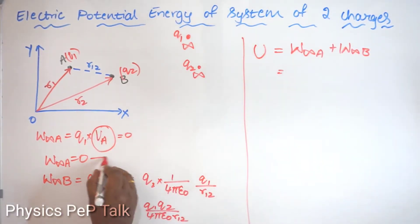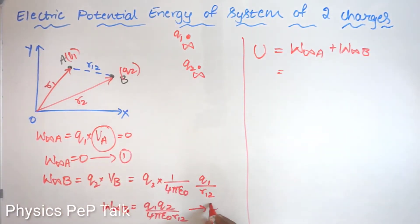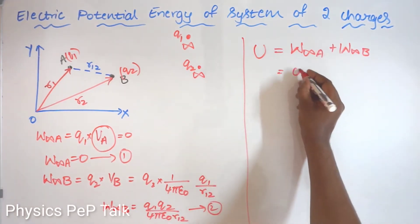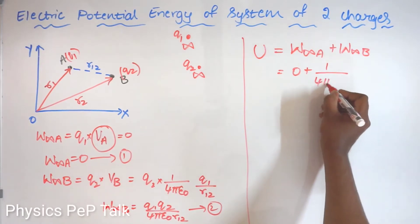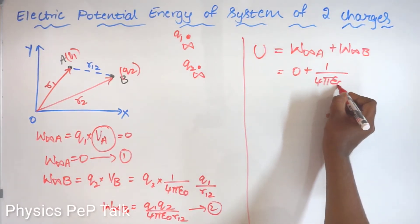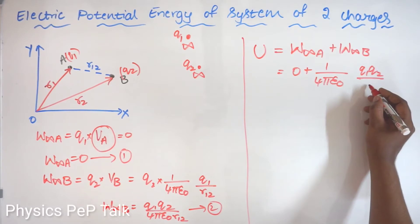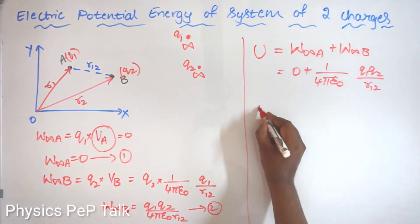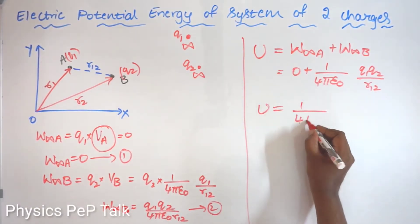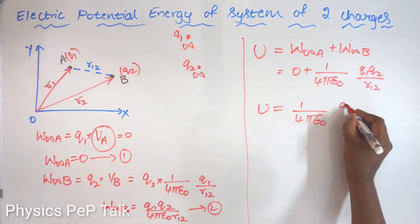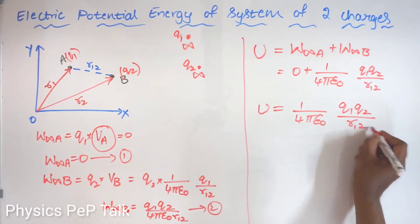The first term is zero. So the total potential energy U equals 0 plus 1 by 4 pi epsilon naught × Q1·Q2 by R12. Therefore, the total potential energy of a system of 2 charges is 1 by 4 pi epsilon naught × Q1·Q2 by R12.